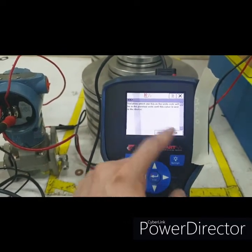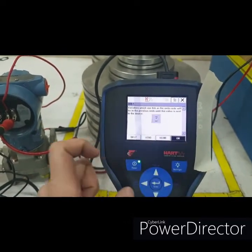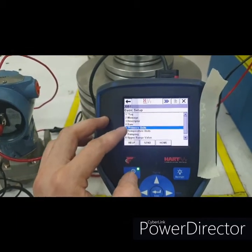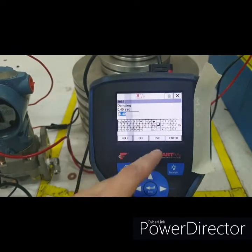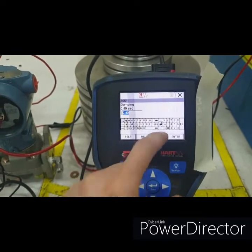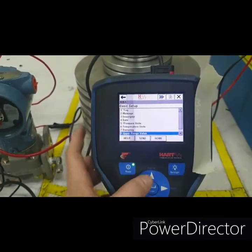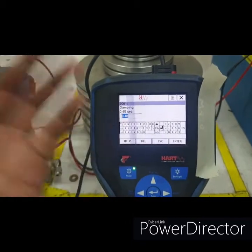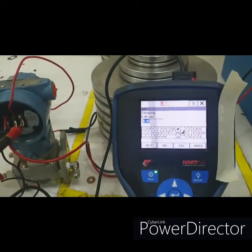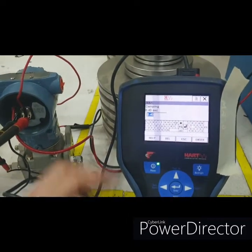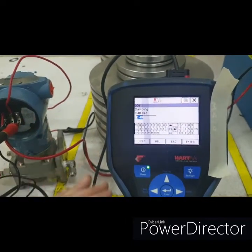We can see there is an asterisk. We can change the damping or leave it to the default value. Damping is just like a filter, so it will filter the fluctuation depending on the frequency of the fluctuation.